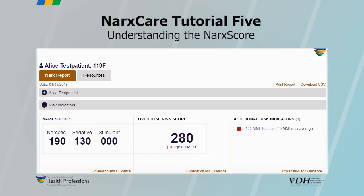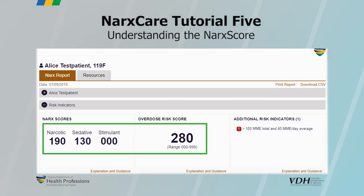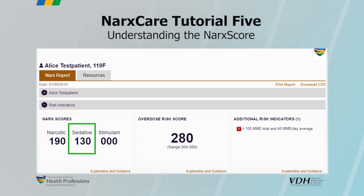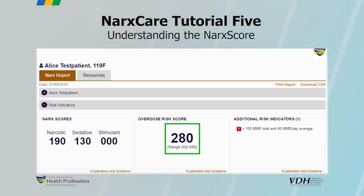NARC scores simplify the analysis of PMP data and point you towards safer prescribing. There are four NARC scores: one for opioids, one for sedatives, one for stimulants, and an overdose risk score.